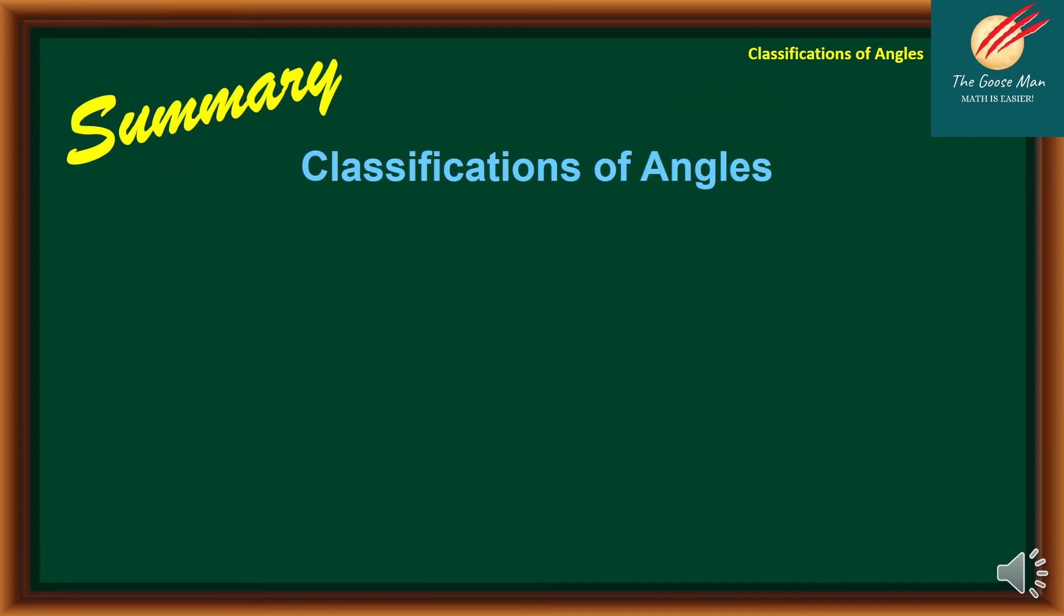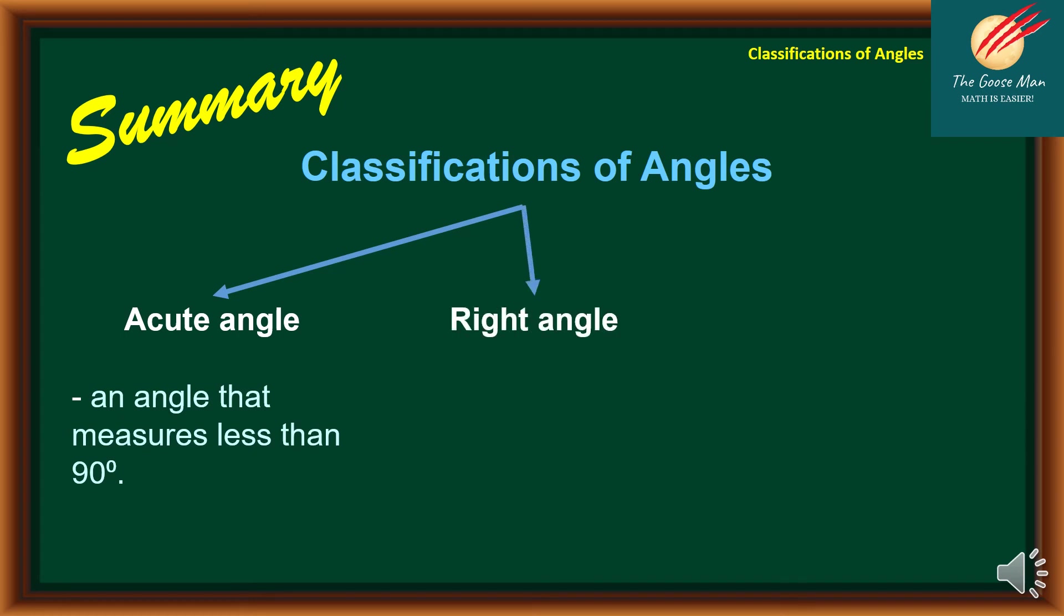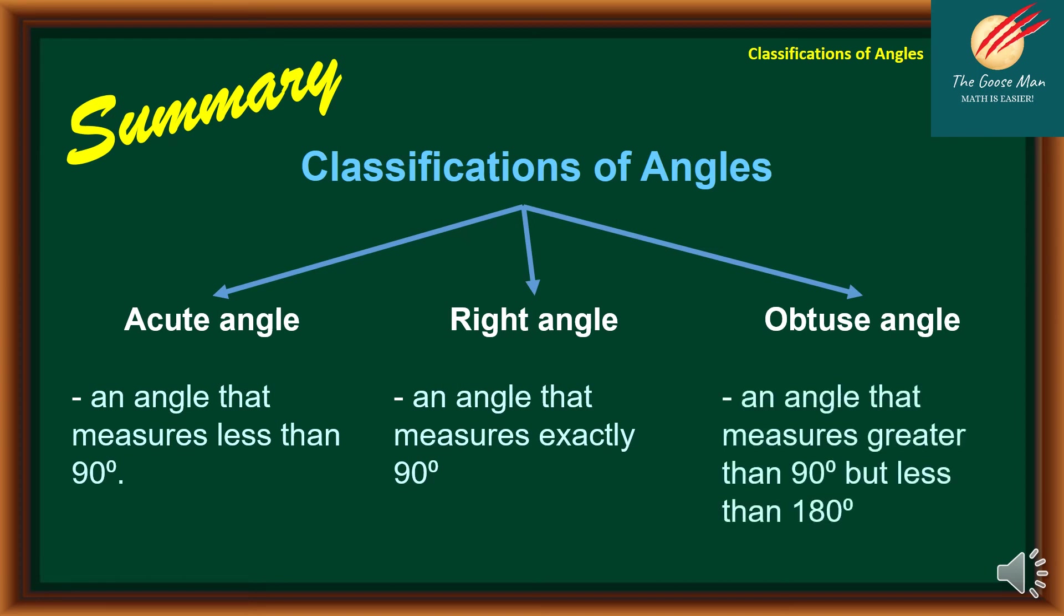To summarize our discussion on classification of angles: number one, acute angle, an angle that measures less than 90 degrees. The second one is a right angle, this angle measures exactly 90 degrees. And finally, we have obtuse angle, which is an angle that measures greater than 90 degrees but less than 180 degrees.